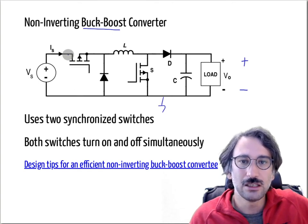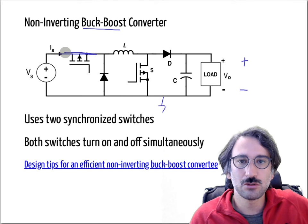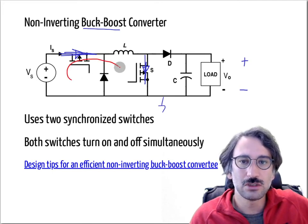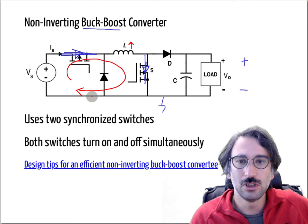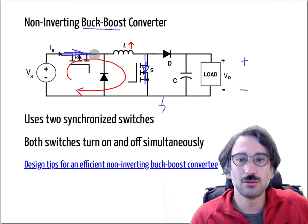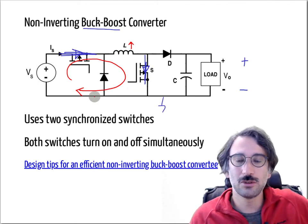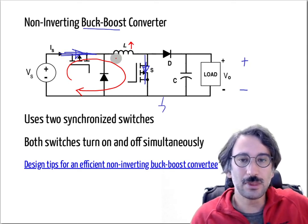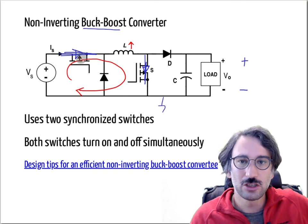You can turn on and turn off both switches simultaneously. When you turn them on, you have a direct contact and the circuit is short-circuited in that path, so you are still charging up the inductor through the supply voltage. One disadvantage is that the current is going through two series switches instead of one, which increases conduction losses. From an efficiency standpoint, that is a disadvantage compared to the normal buck-boost converter.